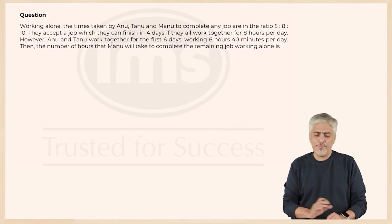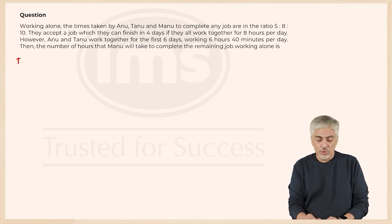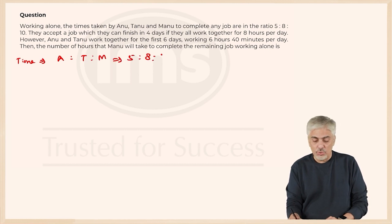Let us have a look at the next question, again a pretty straightforward question from Time and Work. Working alone, the time taken by A, T, and M to complete any job is in the ratio 5:8:10. So time taken by three people, A, T, M, is in the ratio 5:8:10.